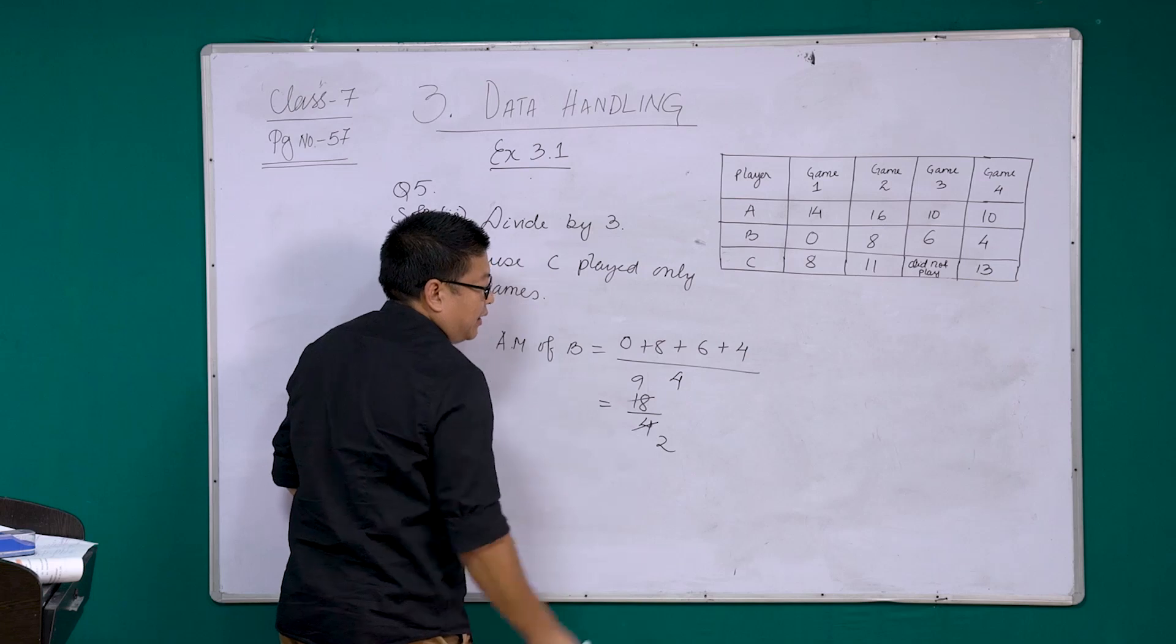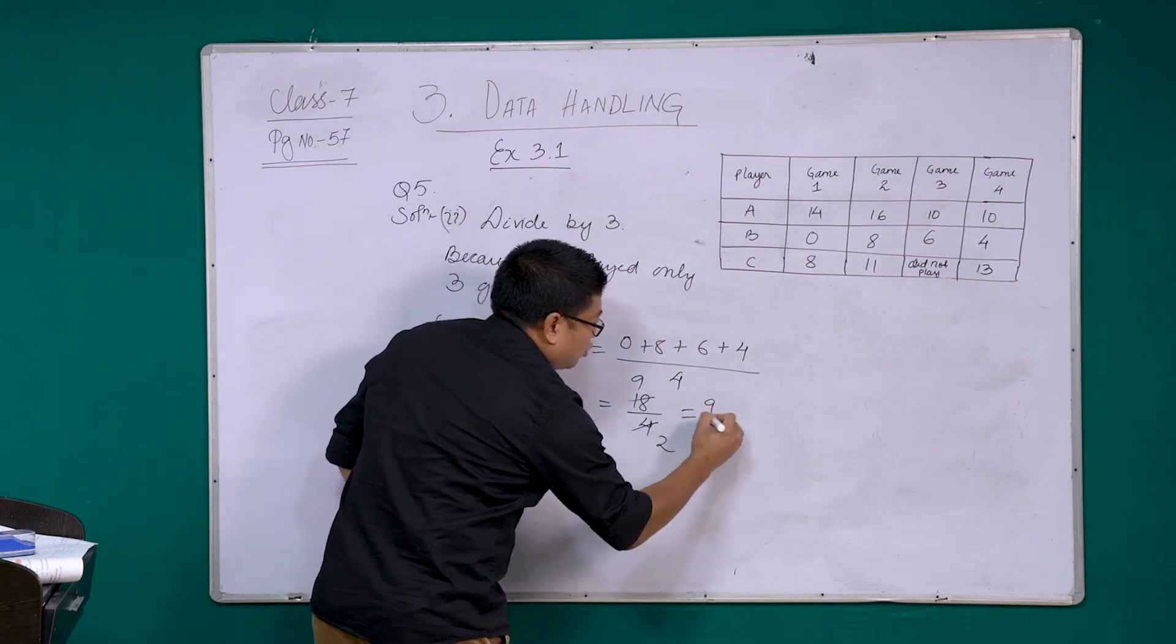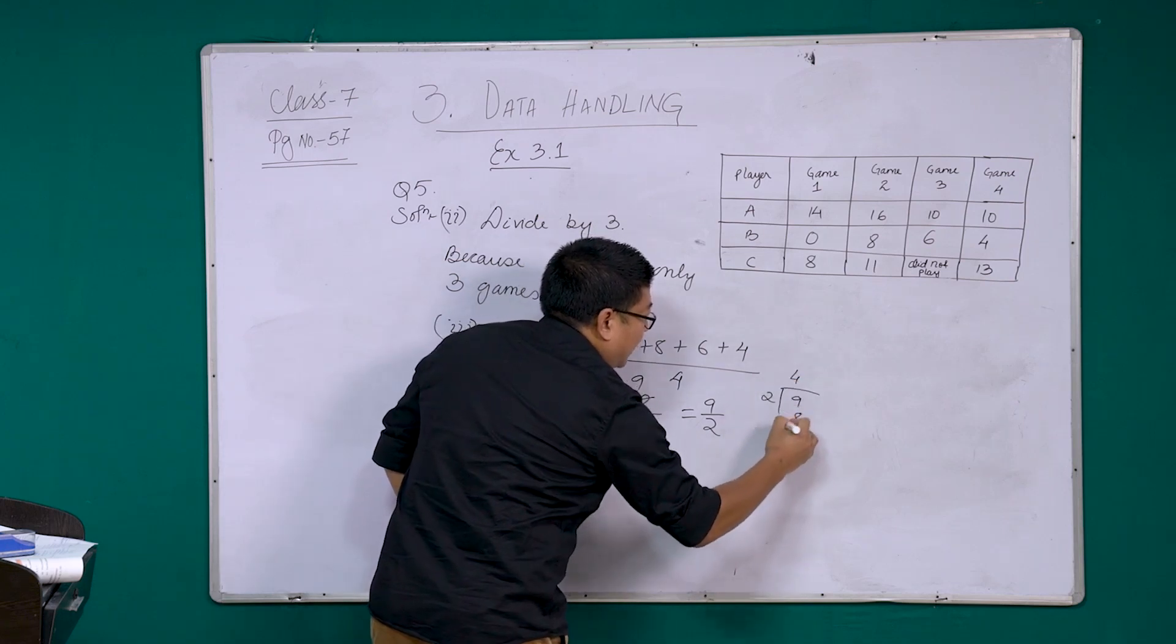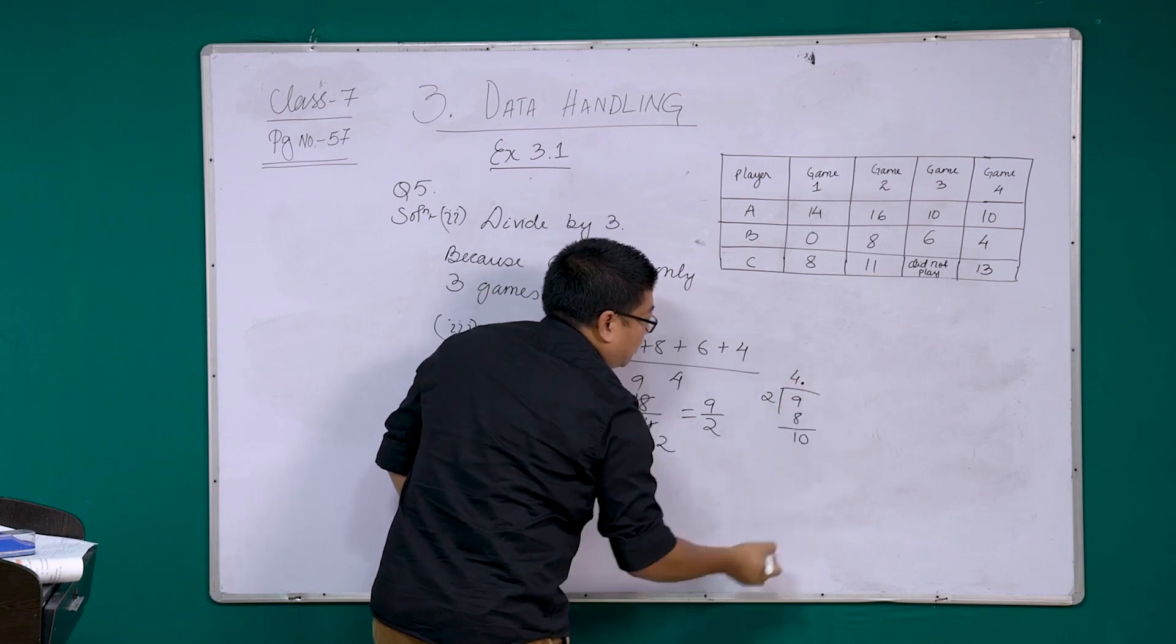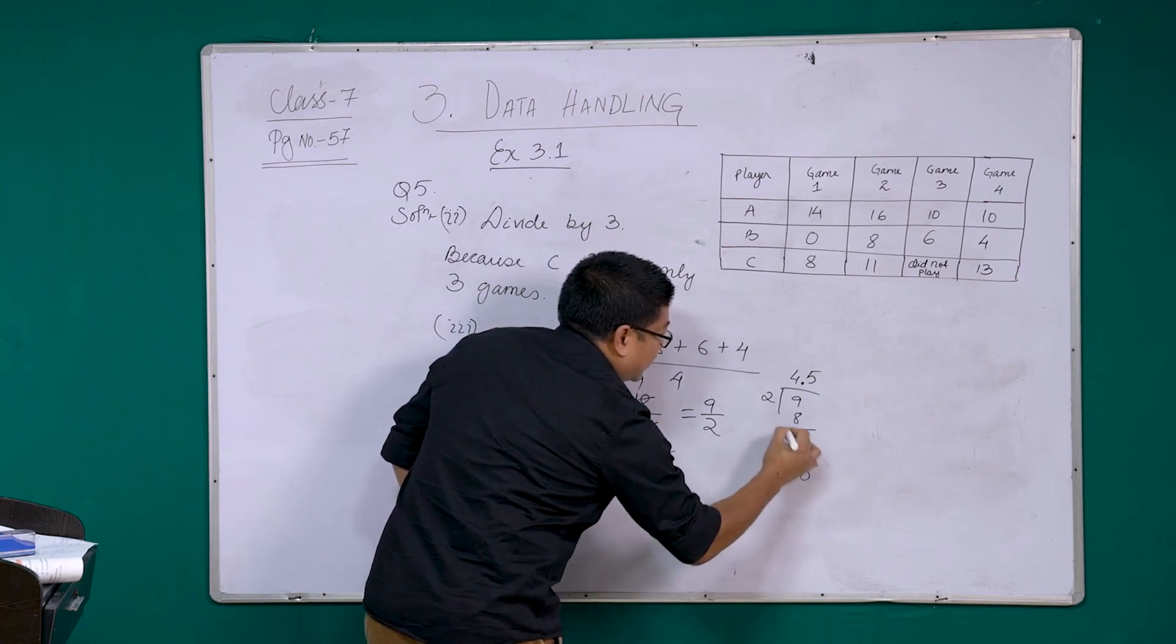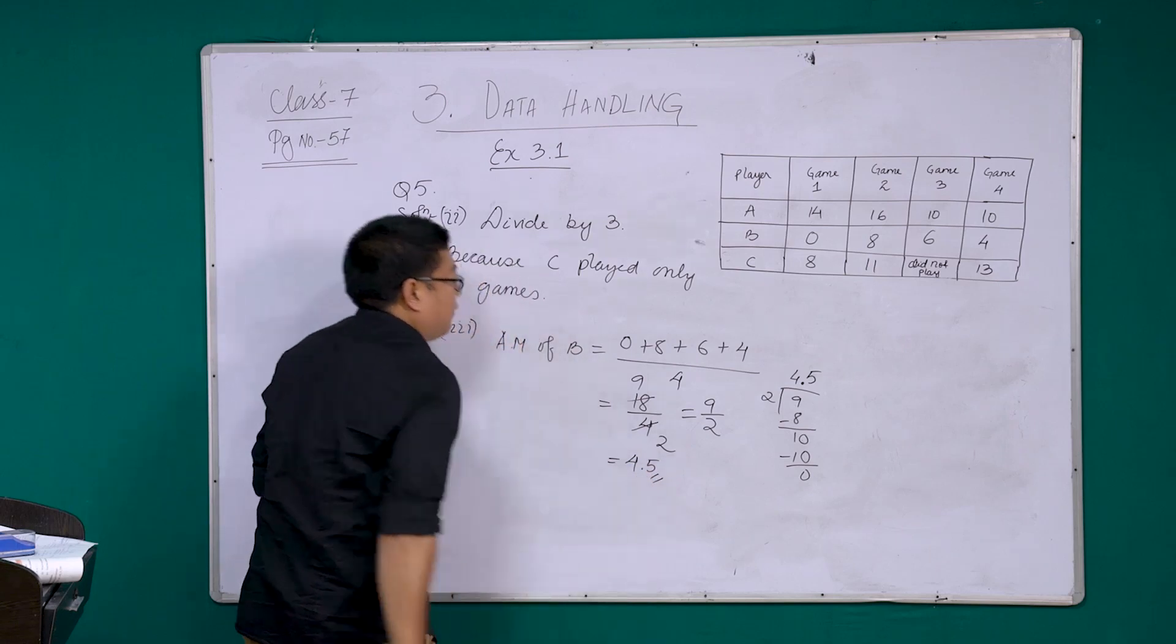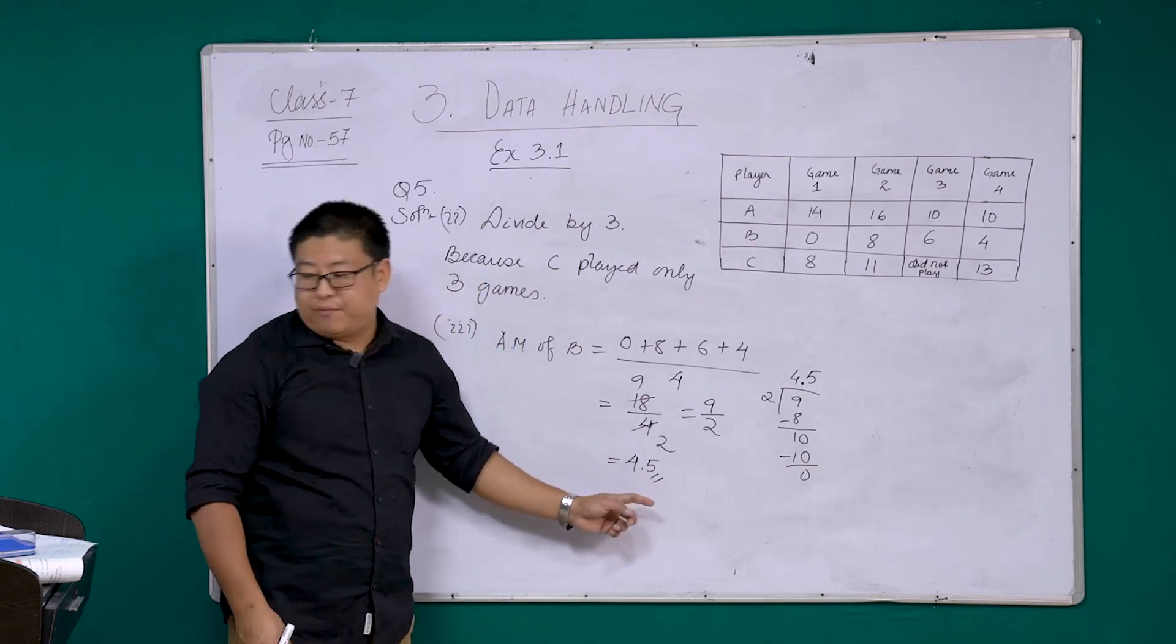If we add, we get 18 by 4. 2 into 2 is 4, 2 into 9 is 18. We can't cancel anymore, so we will write it as 9 by 2. We divide 9 by 2, 2 into 4 is 8, remainder 1. We put a decimal point, bring down 0. 2 into 5 is 10. So your final answer is 4.5. The average or the arithmetic mean of B is 4.5.